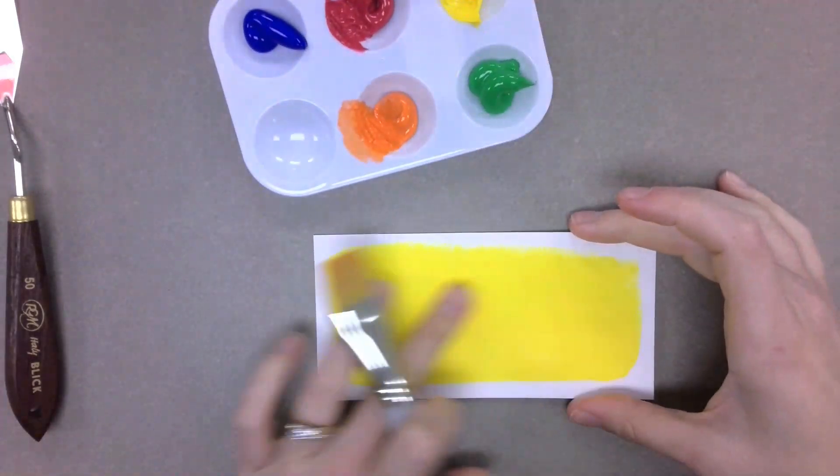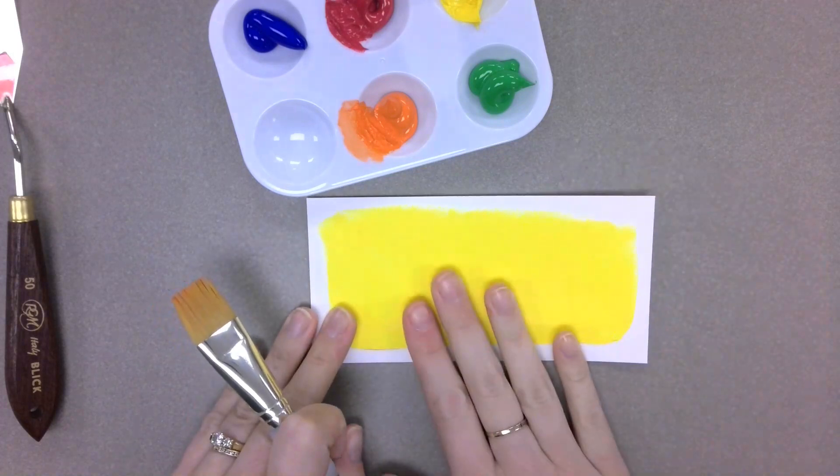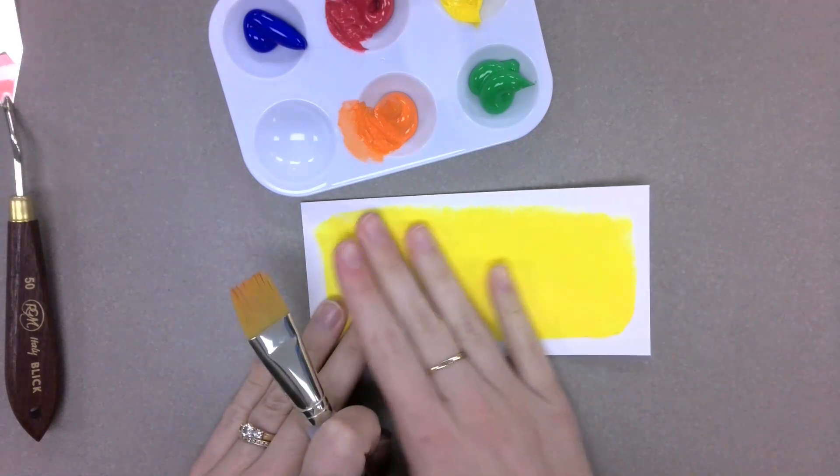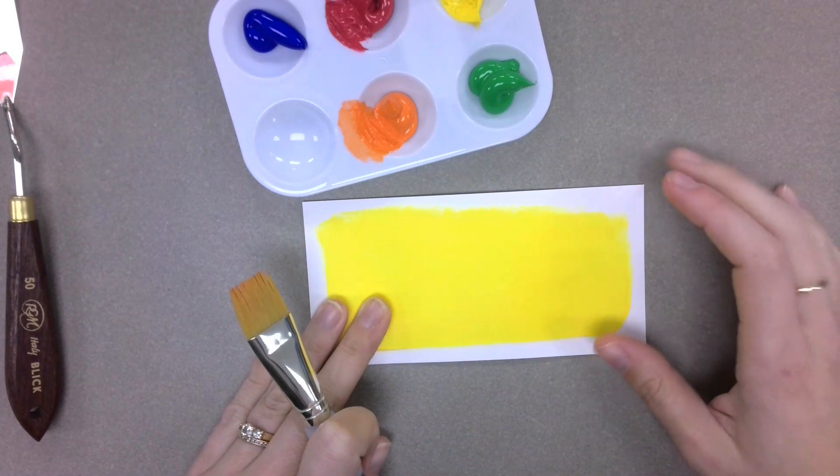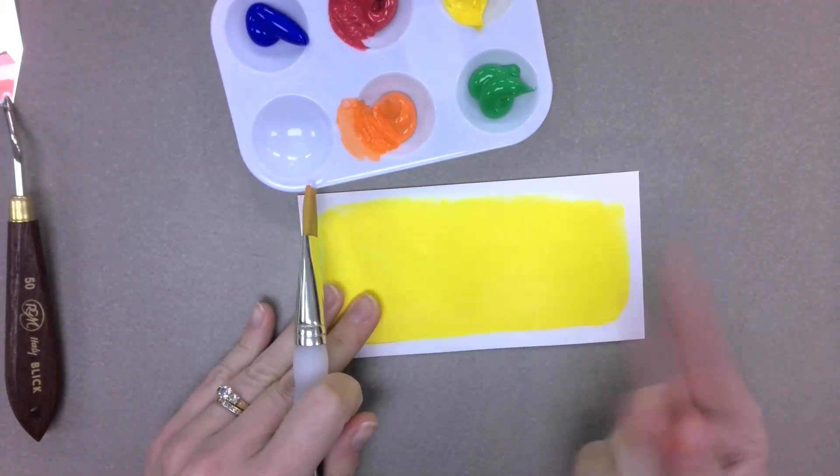So I already have laid down a layer of yellow. And before you can do Sgraffito, you need your bottom layer to be completely dry. So this layer is completely dry now. I touch it, nothing comes off.